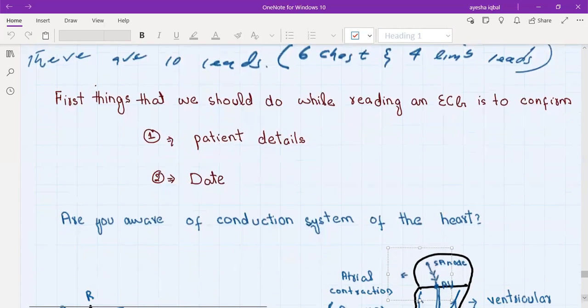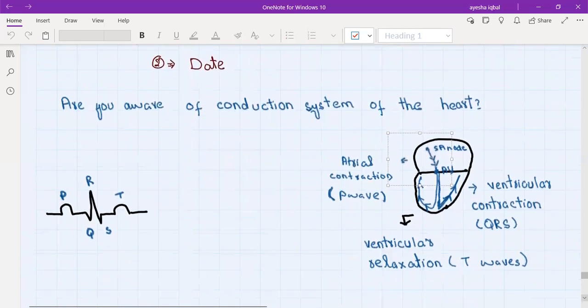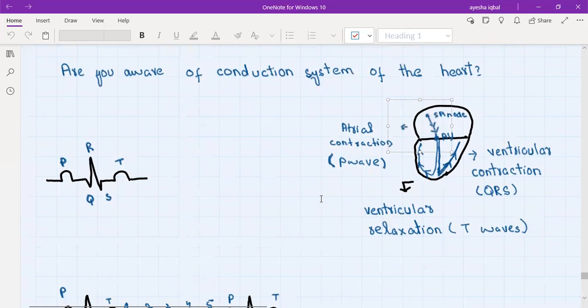Then we'll ask the student if they know anything about the conduction system of the heart. If they don't know then we will take a piece of paper and explain it to them. The heart has four chambers, the upper two are atria and the lower two are ventricles. In the right atrium there is a point called SA node. Electrical activity of the heart starts in the SA node and then it spreads down to the atria. The atria are said to be depolarized when the electrical activity spreads to them, and this produces the P wave on the ECG.